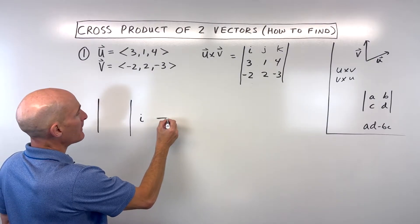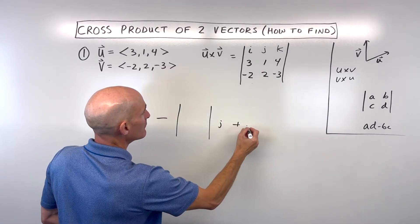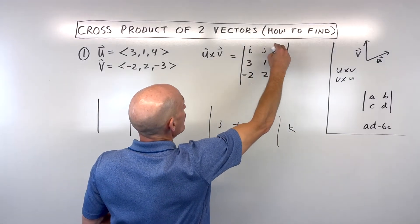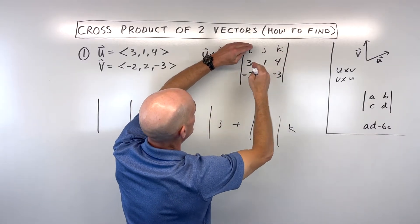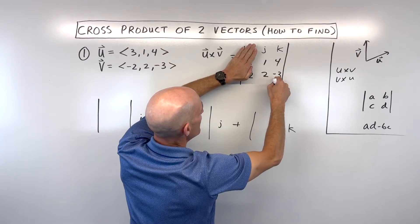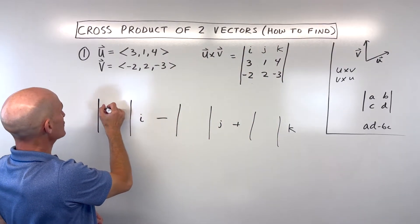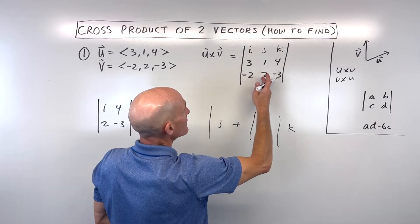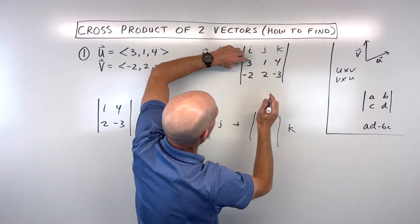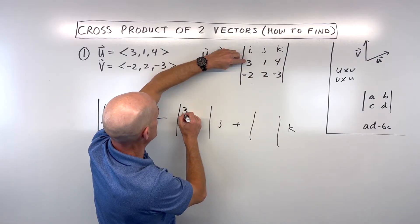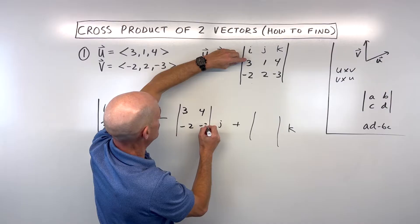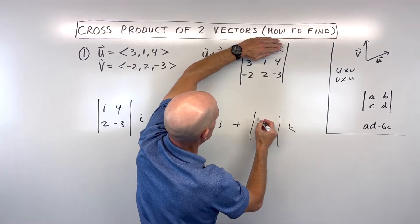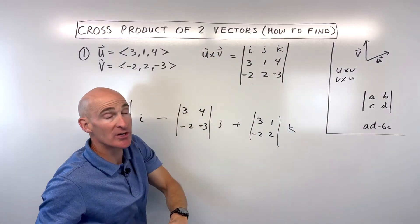We're going to set it up like this, taking the determinant: i minus j plus k. What you do is take the row and column that go through i, cover those up, and the matrix that you're left with — 1, 4, 2, -3 — goes right here and we take the determinant of that. For the middle matrix, we cover the row and column that go through j, and the minor matrix we're left with is 3, 4, -2, -3. Lastly, we take the row and column that go through k, and the minor matrix we're left with is 3, 1, -2, 2.